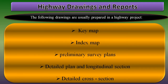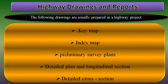The first one is the key map. The key map should show the proposed and existing roads and important places to be connected. The size of the plan generally should not exceed 22 by 20 cm.